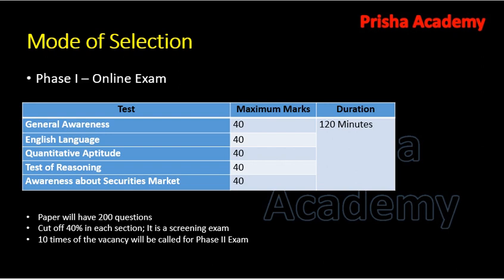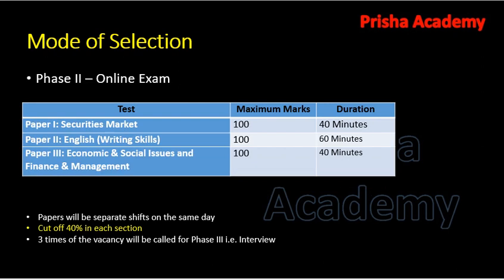The cutoff for Phase 1 is 40% in each section. This is a screening exam and SEBI will call 10 times the number of vacancies for the Phase 2 exam.